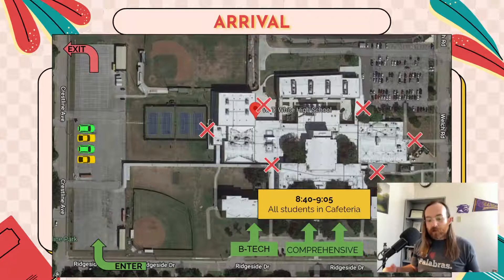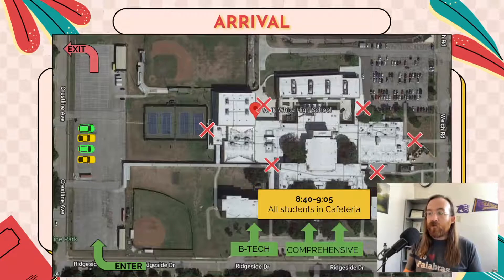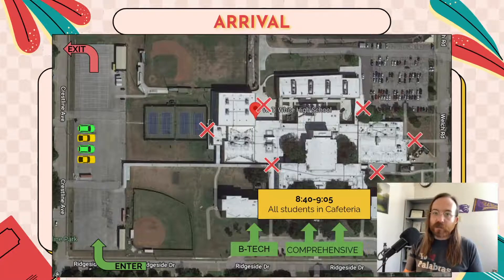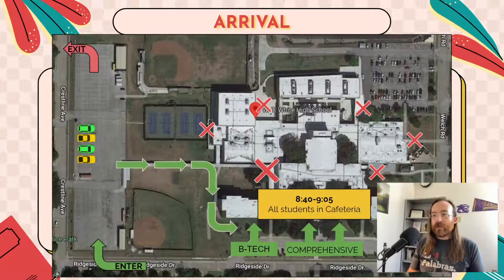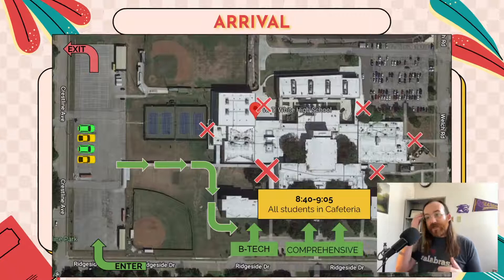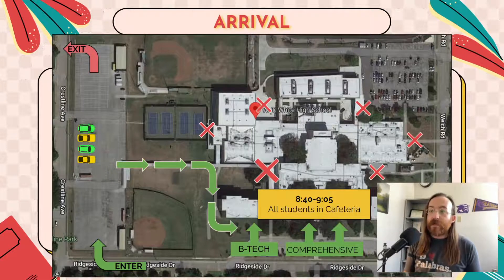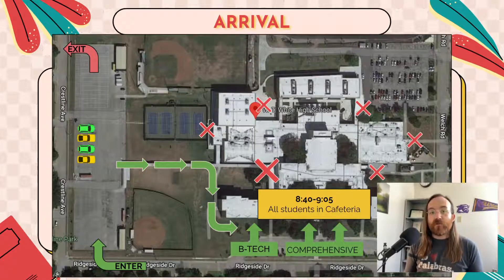We're going to want to have everyone go through the security checkpoint at the front. From 8:40 to 9:05, students can enter the building and go into the cafeteria, where they will wait until the first bell rings to release for first period. It's also important to note that even if you drive into the student parking lot, that entrance on the corner that you've used before will no longer be available, and you'll need to walk around to the front of the building.